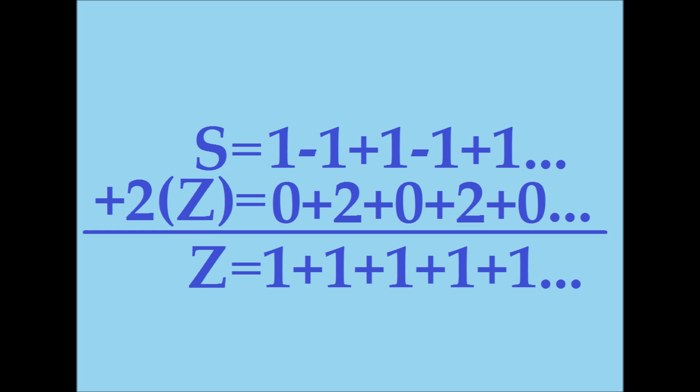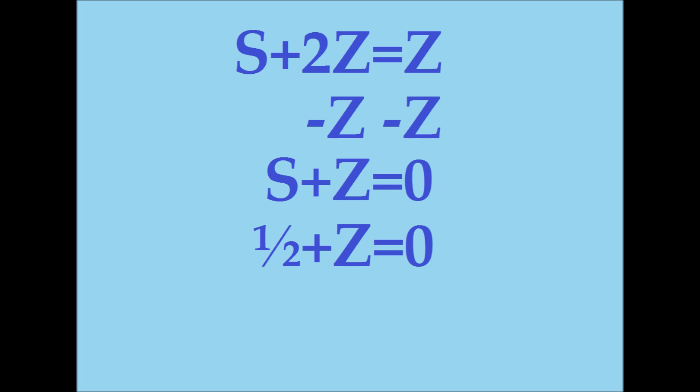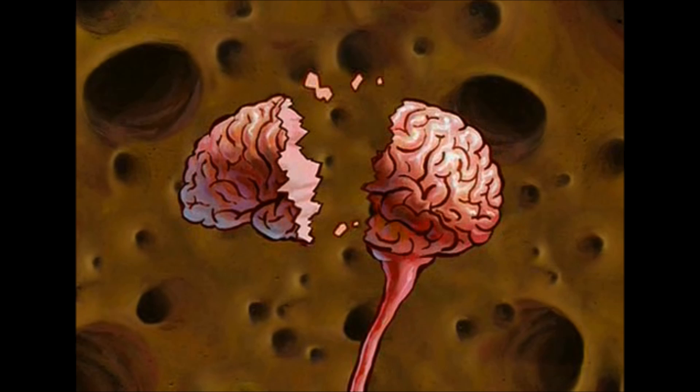Now we have s plus two z is equal to z. If we subtract z from both sides of the equation, we have s plus z equals zero, and we know that s is equal to one-half. This means that z has to be equal to negative one-half.